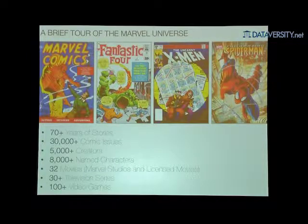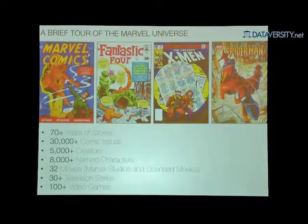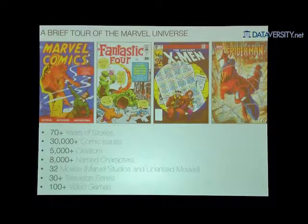A brief tour of our properties from a data perspective. Marvel has been telling stories for over 70 years — our first comic appeared in 1939. In that time, over 30,000 comics have been published, collaborated on by over 5,000 creators. Our stable includes 8,000 named characters, 32 movies produced, 30-plus television shows which often span hundreds of episodes, and 100-plus video games. These are not big data numbers per se, but representing this volume of products to customers is very challenging.